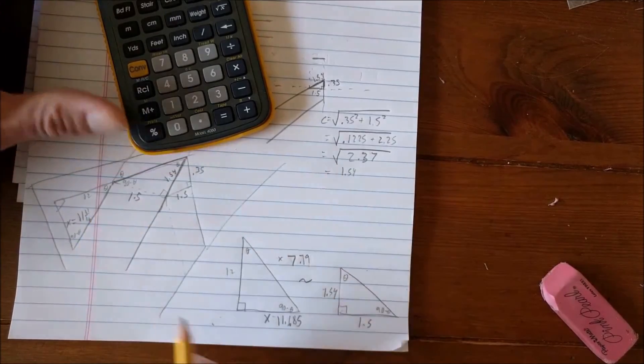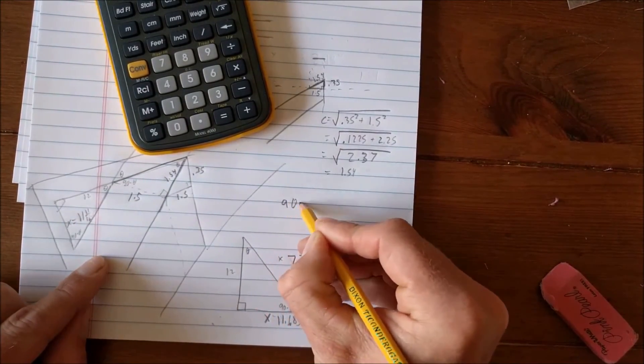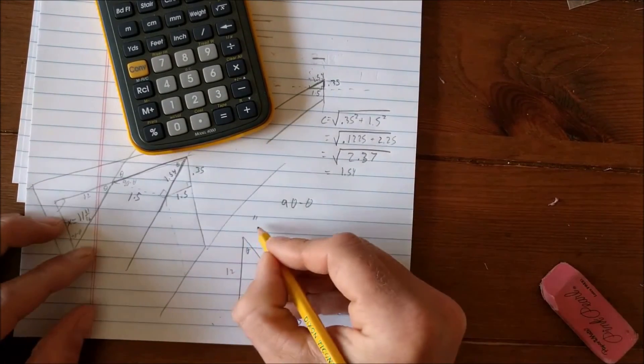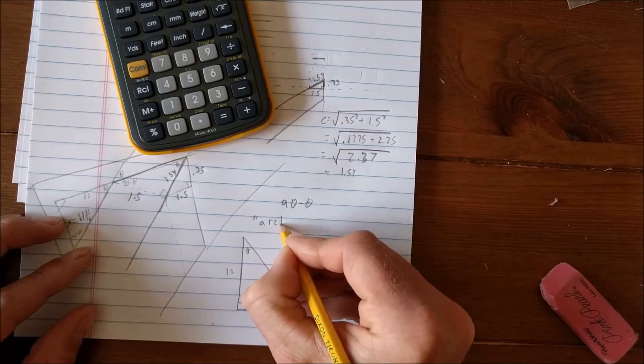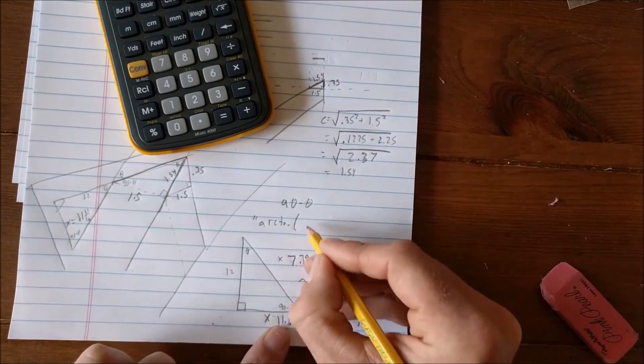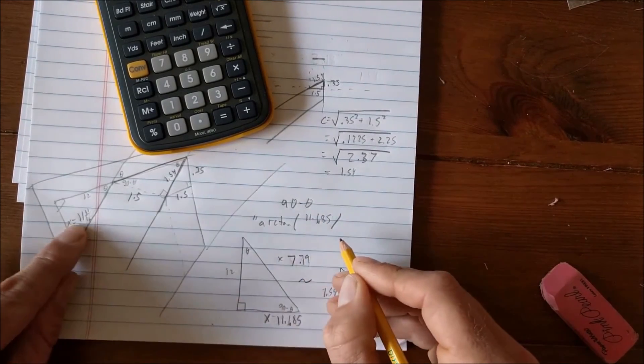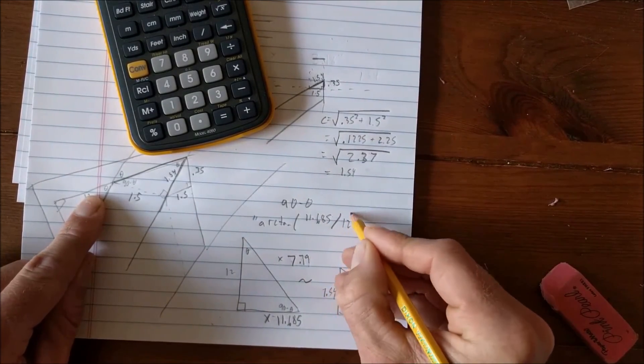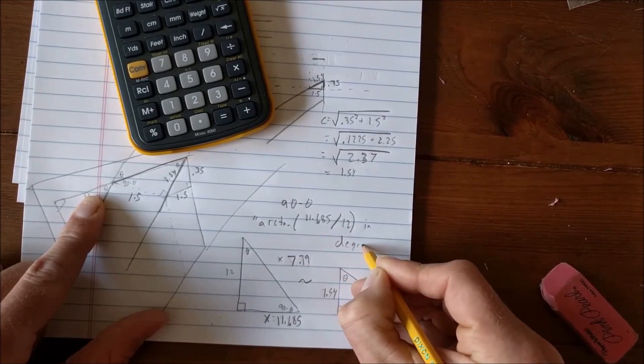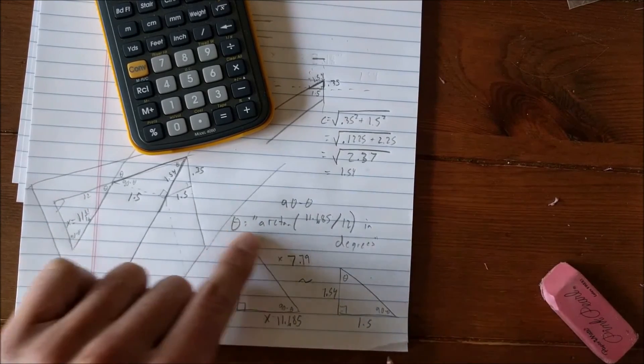And if you want to find out what the angle is, remember the skill saw is going to be set to 90 minus theta. To find theta, we're going to say we go into Google like before and say the arc tangent, arc tan of opposite 11.685 divided by adjacent 12, and just keep typing degrees. And that's going to give you theta, right? And then you say 90 minus theta.